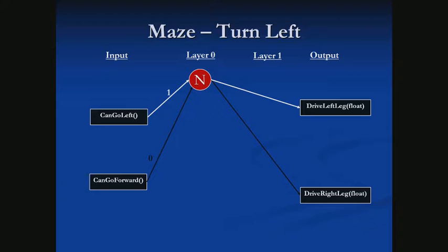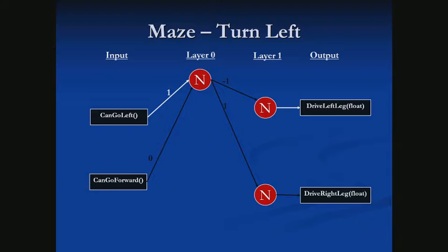Next, we might try to attach this neuron's output directly to our drive left and drive right legs. But if this neuron says yes, we should turn left, it would power both legs forward — making the agent move forward instead of turning left. So we'll add another layer of neurons, which allows us to weight what those legs do individually. For the layer 1 neuron connecting to the left leg, we give it a negative value, and the right leg a positive value. Now, when the should-turn-left neuron outputs true, it moves the left leg backwards and the right leg forwards, turning the agent left.